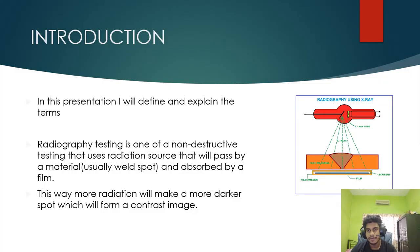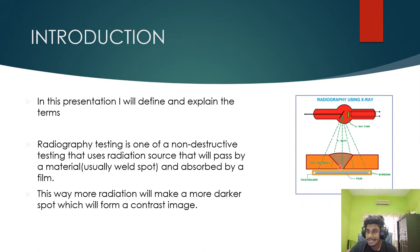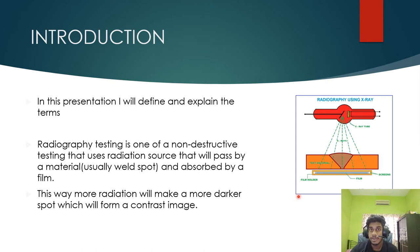Before I explain further about image quality, I would like to introduce and define the terms in radiographic testing, which is non-destructive testing. In NDT, they use a radiation source that passes through a material. The radiation source — X-ray or gamma ray — passes through the material, such as a welding spot, and is absorbed by the film beneath the material. This radiation makes a darker spot, creating a contrasting image on the film, and this is how we identify whether there is a defect or not.